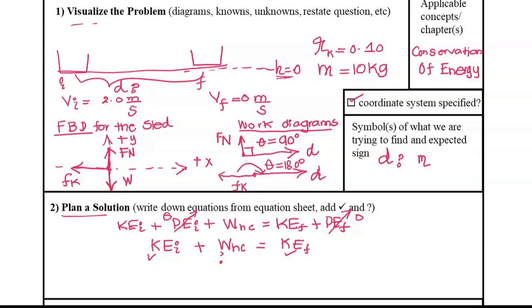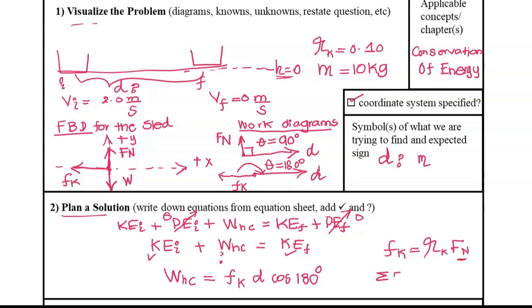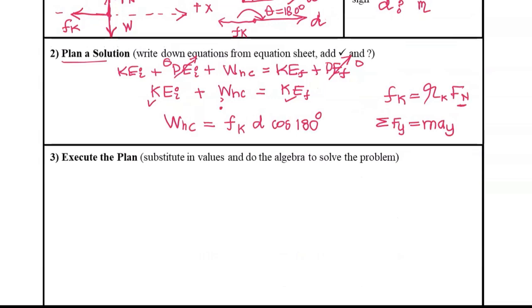The next equation is for work done by non-conservative forces: W non-conservative equals the magnitude of the kinetic friction force times the magnitude of displacement times cosine 180 degrees. Work done by normal force is zero because the angle is 90 degrees, so I won't include it. We also need: kinetic friction force equals coefficient of kinetic friction times normal force. To find normal force, we'll use Newton's second law in the y-direction.